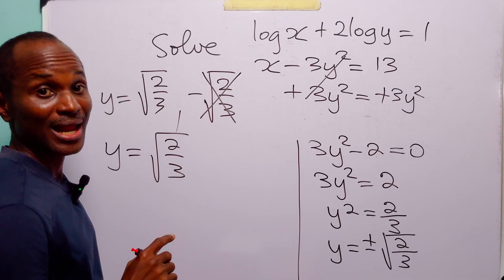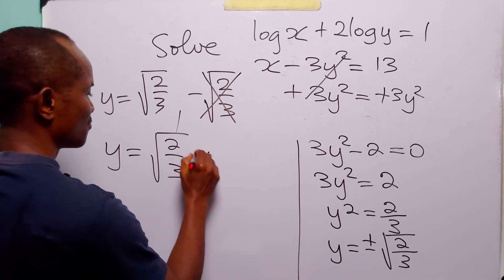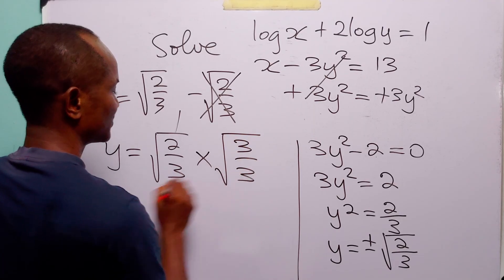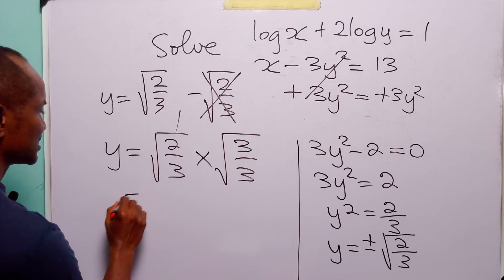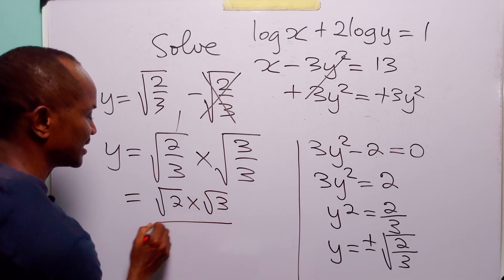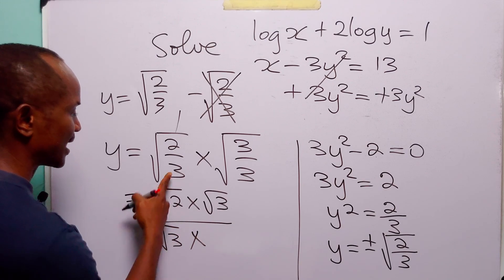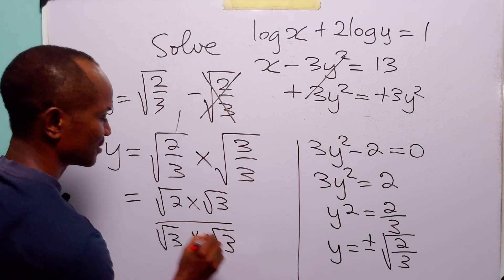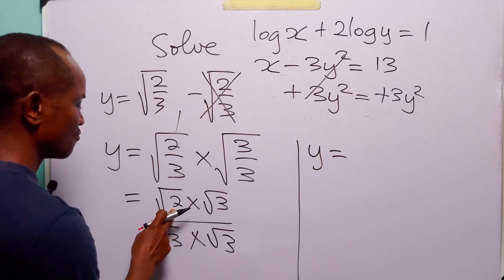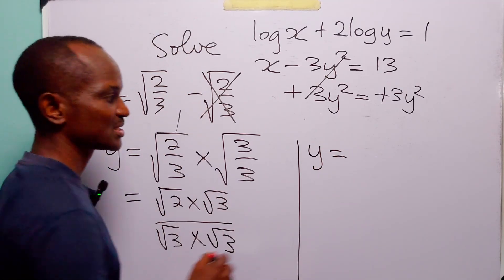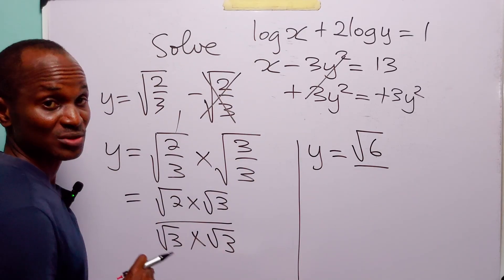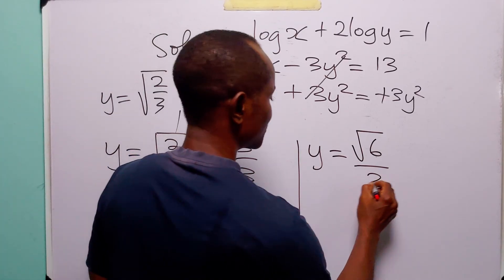Now let us rationalize this. We multiply by root 3 over 3, and of course this is the same as root 2 times root 3 divided by root 3 times root 3. So y is equal to root 6 over 3, since root 2 times root 3 is root 6, and root 3 times root 3 is equal to 3.